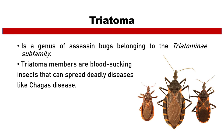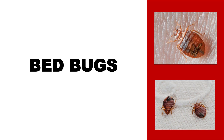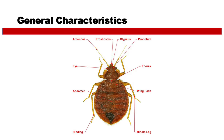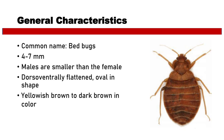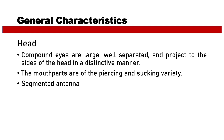General characteristics of bed bugs: the common name is bed bug. They are 4 to 7 millimeters in size; males are smaller than females. They are dorsoventrally flattened and oval in shape, yellowish-brown to dark brown in color.